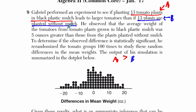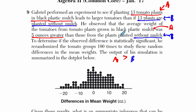A is making larger tomato plants from the black plastic mulch. He observed that the average weight of the tomatoes from tomato plants grown in black plastic mulch — I'll label that as A — was five ounces greater than those from the plants planted without mulch, and that is B. Without mulch and then with black plastic mulch.